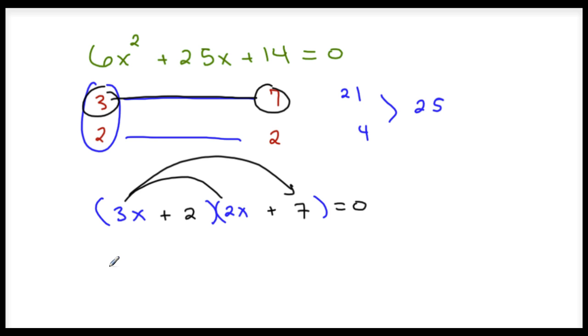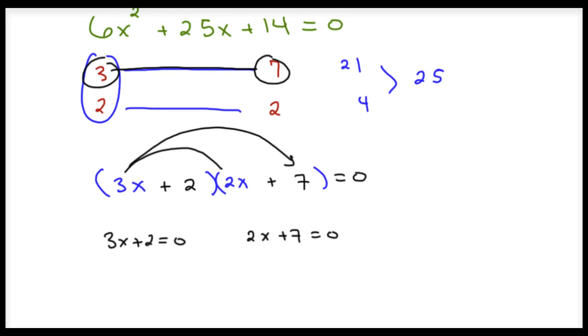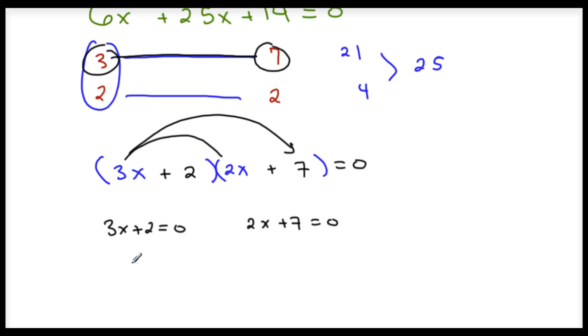Last step. Take each factor. 3x plus 2. Set it equal to 0. Take 2x plus 7. Set it equal to 0. Solve both these equations for x. If you solve the first equation for x, you've got x equals negative 2 thirds. Solve the second equation for x. x equals negative 7 halves.